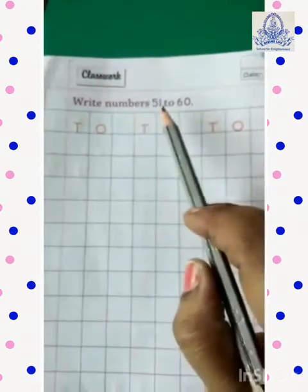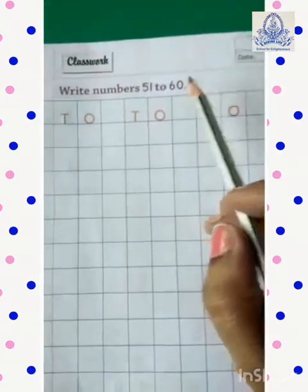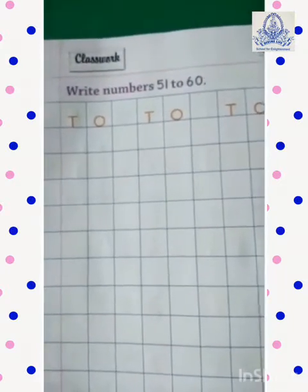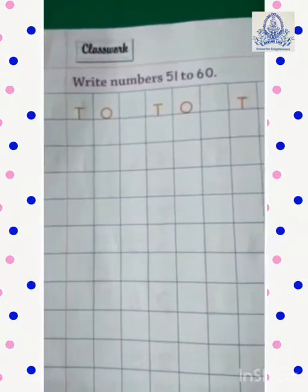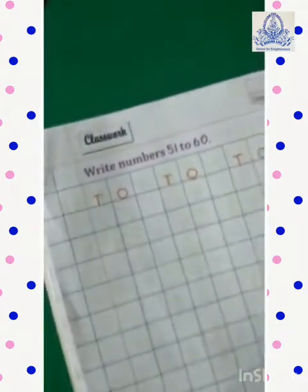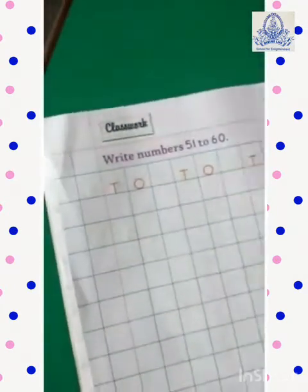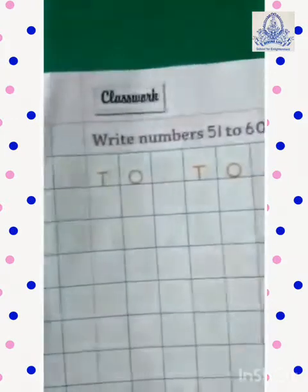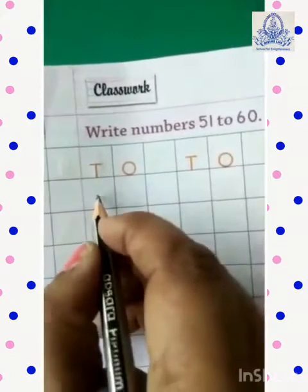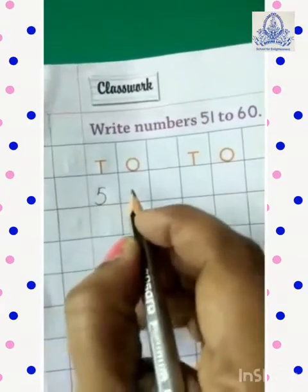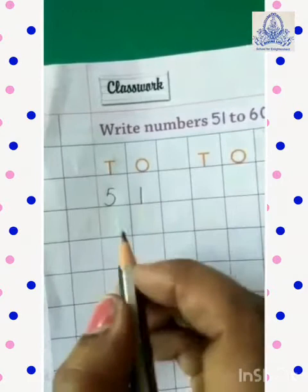Write numbers 51 to 60. Here we have numbers 51 to 60. Okay, let's start writing. Number is 51. So, write 51. 5, 1, 51.